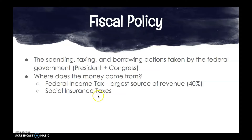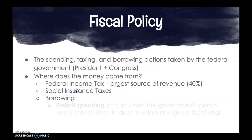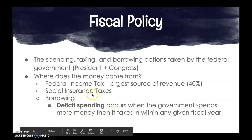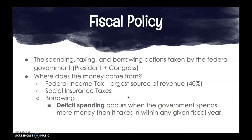We also have social insurance taxes that fund Social Security and Medicare programs. Employers apply these taxes to their employees, who then receive those social insurance benefits. The government will also regularly borrow money, most of it from its taxpayers. Deficit spending occurs when the government spends more money than it takes in within a given fiscal year.